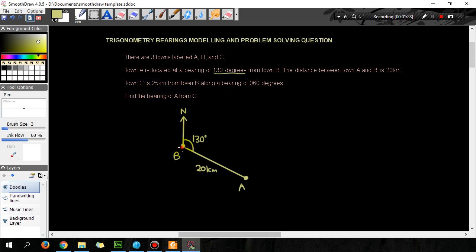So town B again is the starting point, 25 kilometers from town B along a bearing of 60. I'm going to draw another line, I'll use a different color. So town B to town C is a little bit further, so the line will be a little bit longer. I end up at town C and the bearing is 60 degrees. So this angle here is 60 degrees.